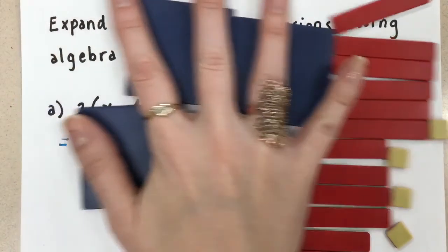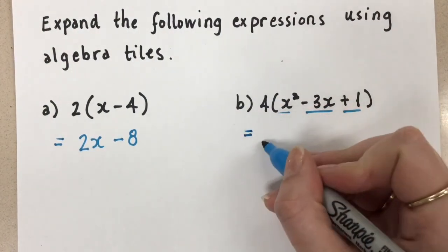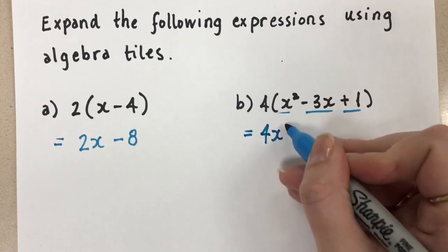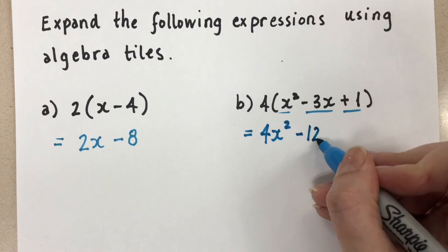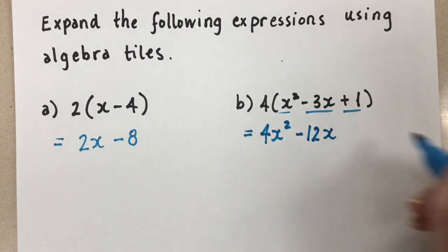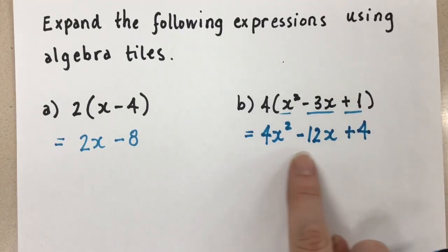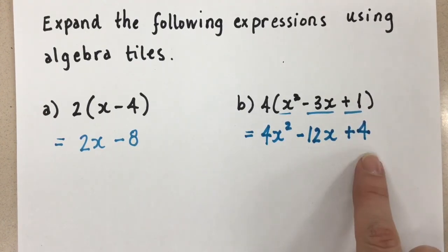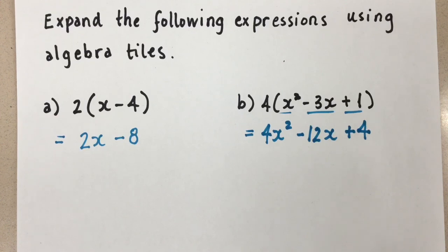Let's get that all written down. So I'm going to clear this off. And when we expanded, we had 4 positive x squareds. We had negative 12 x's. And then we had positive 4 ones. And that's our final answer here. We do not combine these together because they're all different terms. So we don't want to combine them together. And that's how we expand using algebra tiles. Thanks for watching. Mrs. A loves math.